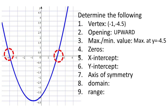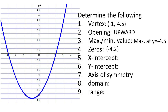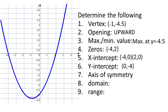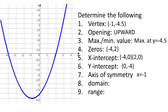For the zeros: the zeros are the values of X when Y is 0. As shown in the illustration, the zeros are negative 4 and 2, making the x-intercepts (−4, 0) and (2, 0). The y-intercept is the intersection of the graph and the y-axis, which is at (0, −4). The axis of symmetry passes through the vertex at (−1, −4.5), so the axis of symmetry is X equal to negative 1.